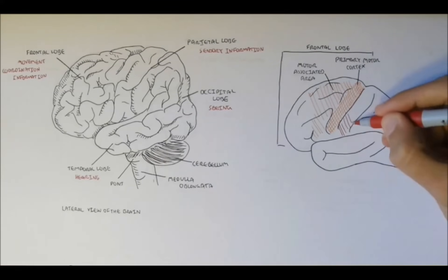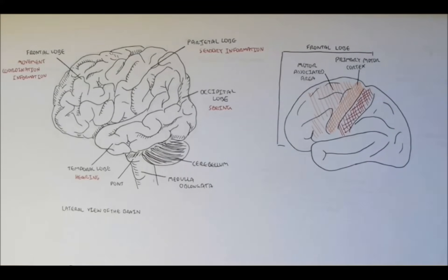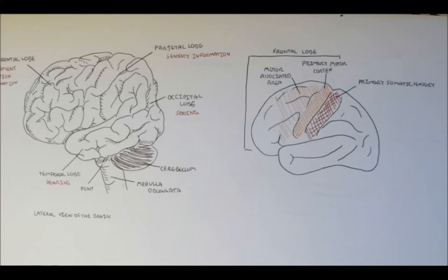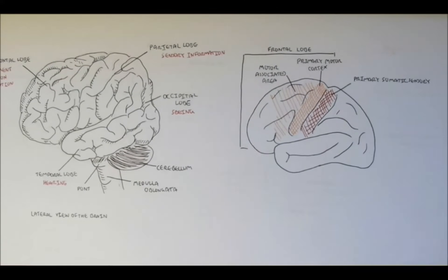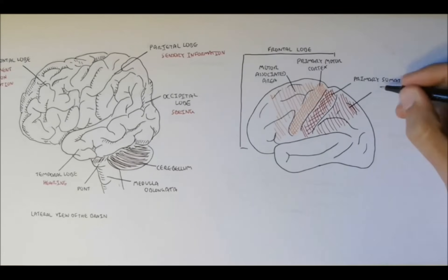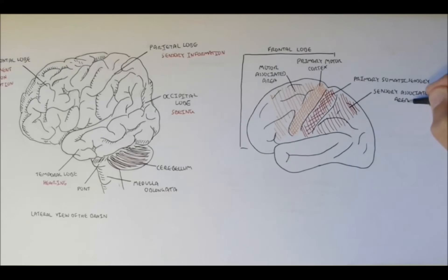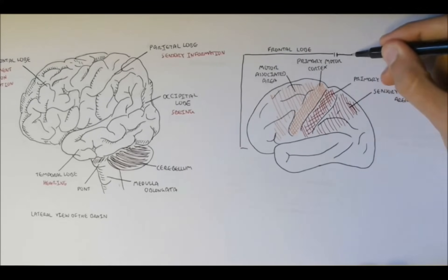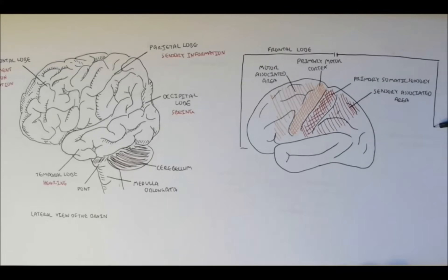Right next to the primary motor cortex, we have another area called the somatosensory cortex, or the primary somatosensory cortex. This area is important in receiving somatic stimuli such as touch, pain and heat. Right next to the primary somatosensory cortex is the sensory associated area. These make up part of the parietal lobe.